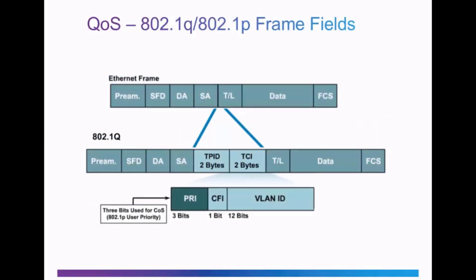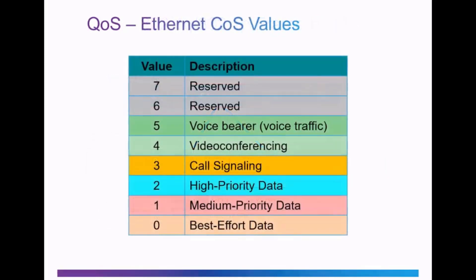In this slide, you can see how QoS marking happens at Layer 2. We have an Ethernet frame and the 802.1Q protocol can be inserted between the source address and the type length field. You can see two fields inserted into the Ethernet frame: the TPID field and the TCI field, or tag control information field, which contains a 3-bit PRI priority field identifying the class of service, or COS, marking. The class of service markings have six different values: best effort, medium priority data, high priority data, call signaling, video conferencing, and voice bearer for voice traffic.